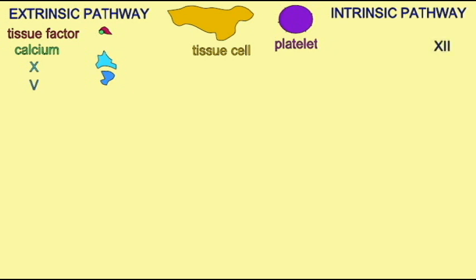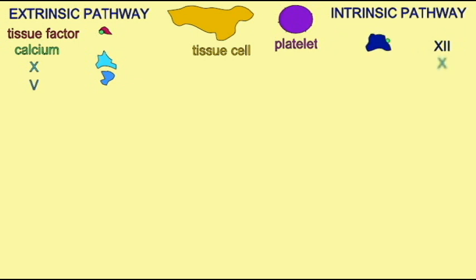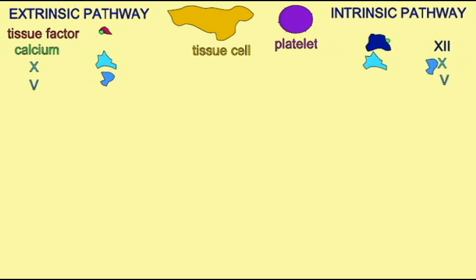Both the intrinsic pathway and extrinsic pathway are sufficient alone to start coagulation. These are two alternate routes by which coagulation may be initiated — by events outside the blood vessel in the extrinsic pathway, or inside the blood vessel in the intrinsic pathway.